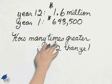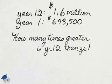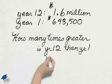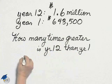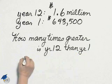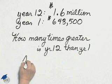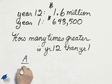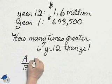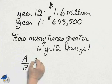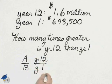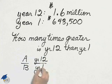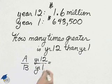The phrase 'how many times greater is year 12 than year 1' can be written as a fraction with the number from year 12 in the numerator and the number from year 1 in the denominator.